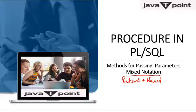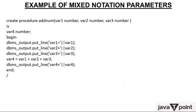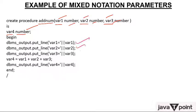We will understand what mixed notation is. The example we are using is the same procedure called add_num with three parameters: variable1, variable2, and variable3, all having data type NUMBER. We have also created variable4 having data type NUMBER. In the BEGIN section we are printing variable1, variable2, variable3, adding them into variable4, and finally printing variable4.